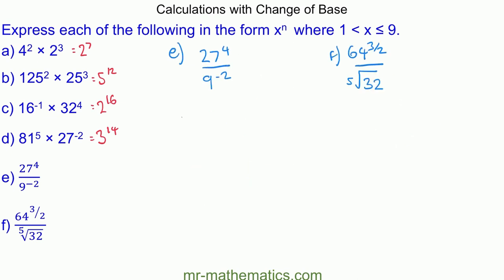For question e, for 27 we write the base as 3, which is 3 cubed, raised to the power of 4. Using the power rule, this becomes 3 to the power of 12. For the denominator, we write 9 as 3 squared, raised to the power of negative 2, which becomes 3 to the power of negative 4.